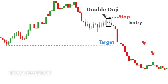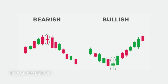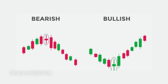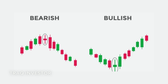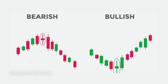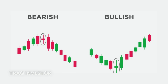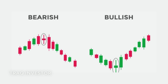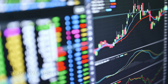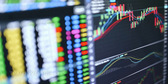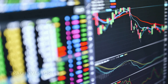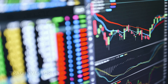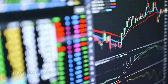Next up, the spinning top pattern, featuring a short body between equal length wicks, indicating market indecision. While it's a benign signal on its own, it can hint at future developments, signifying a loss of control by current market pressures.